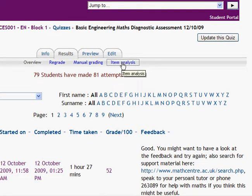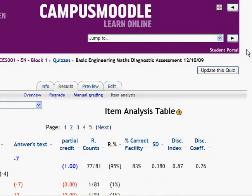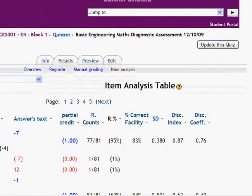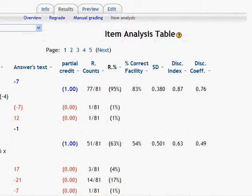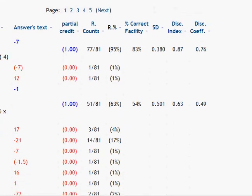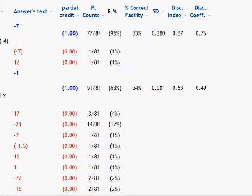On the item analysis page we get information about overall how students responded to the questions. And this can give us some useful information. So for example in the second question here, there's a question on BODMAS.